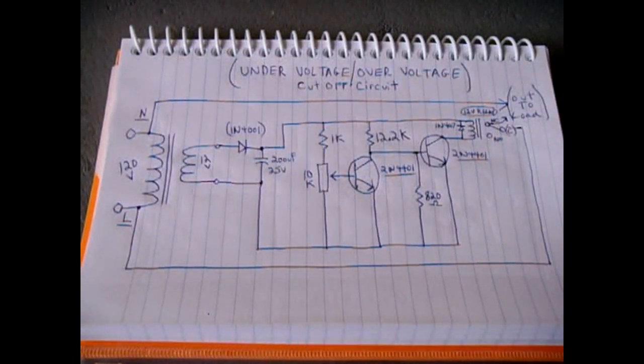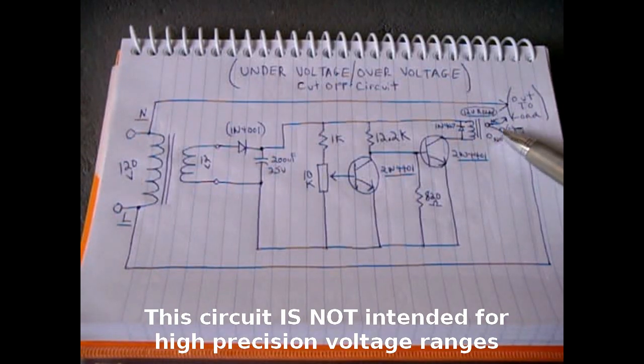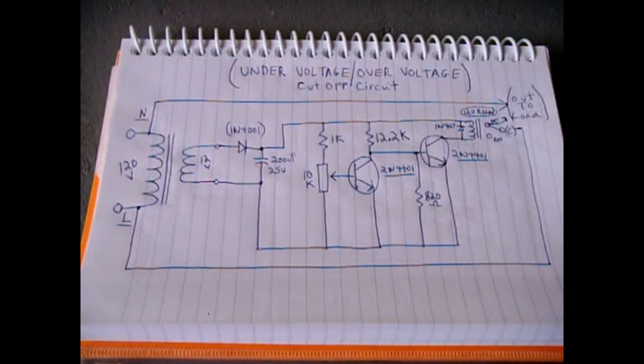The schematic as you see it shown here was found online. I'll post a link in the video description. If your 120 volts drops to around 100, the relay will open removing power to the load, or if the voltage climbs above 130, the relay will open disconnecting power to the load. It also works the same for 240 volt circuits. If it goes up to around 260-270, the circuit will open the relay, and if it drops too low to around 200 or 210 volts, the circuit will also open.